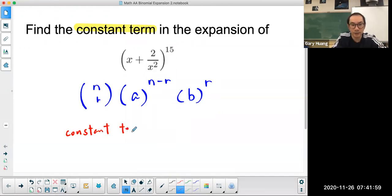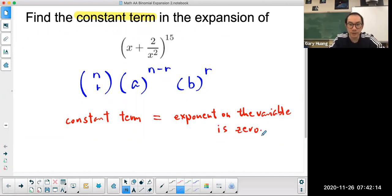Constant term means the exponent on the variable is zero. So what you can do is expand using the binomial theorem and isolate the variable term. Let me show you.